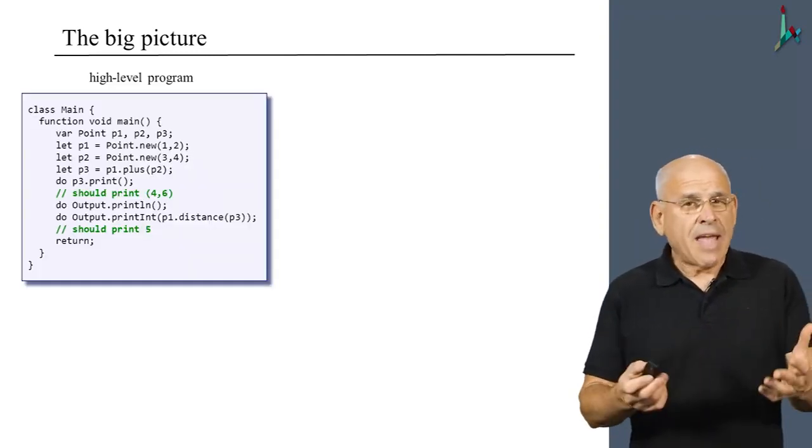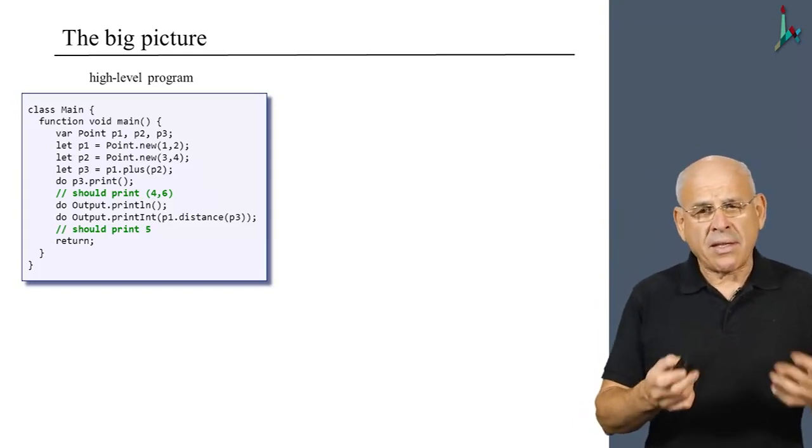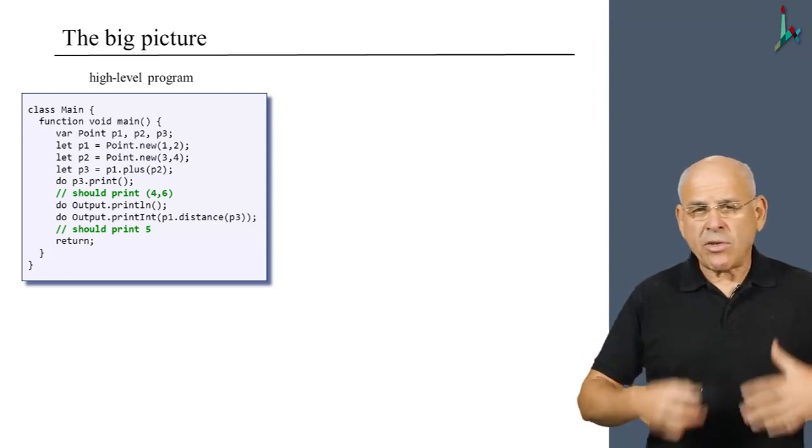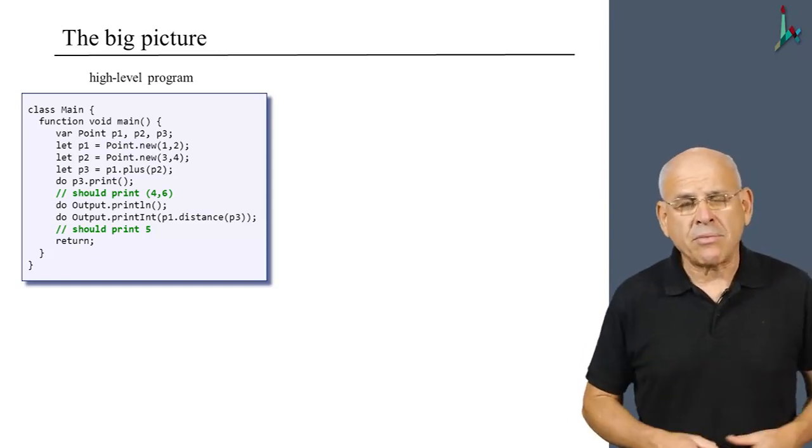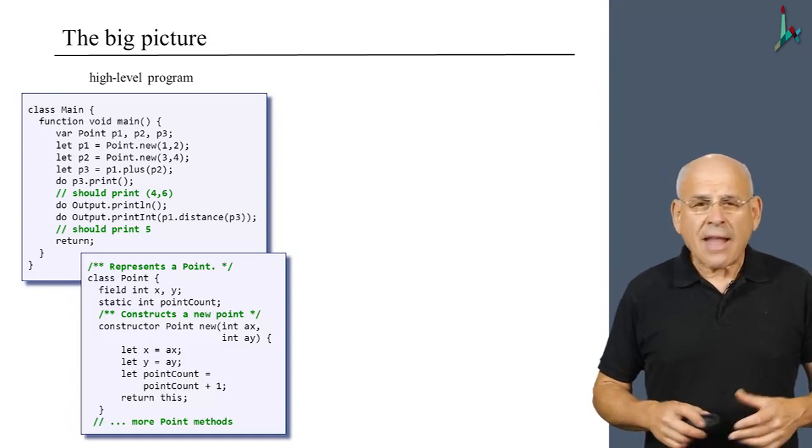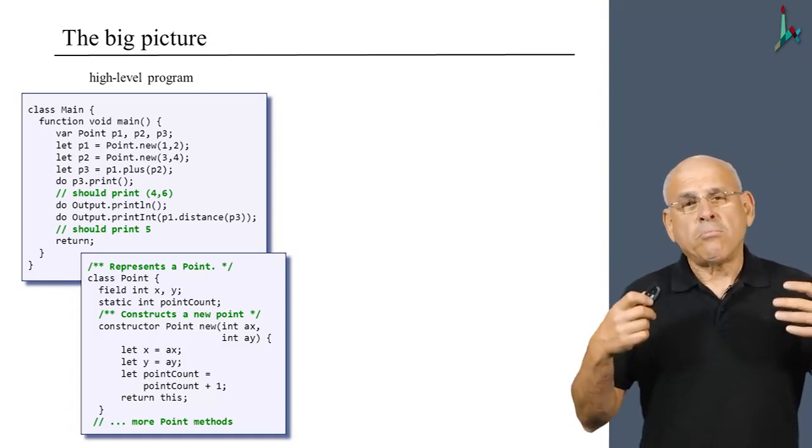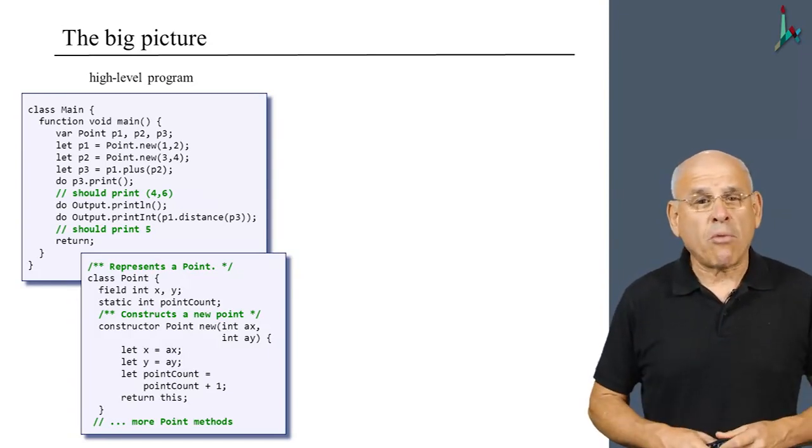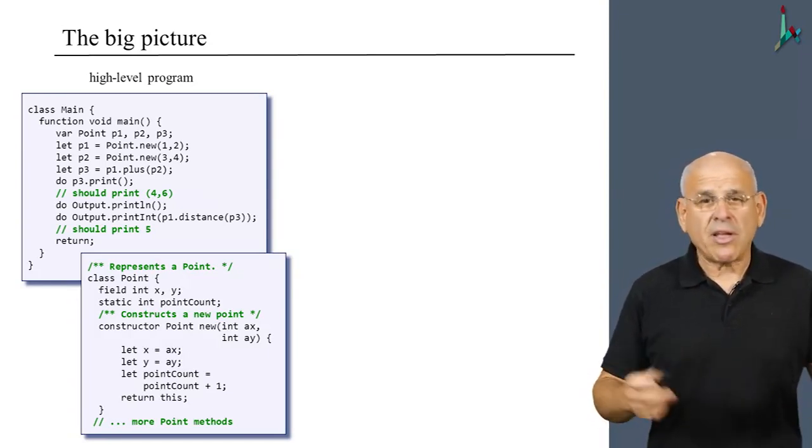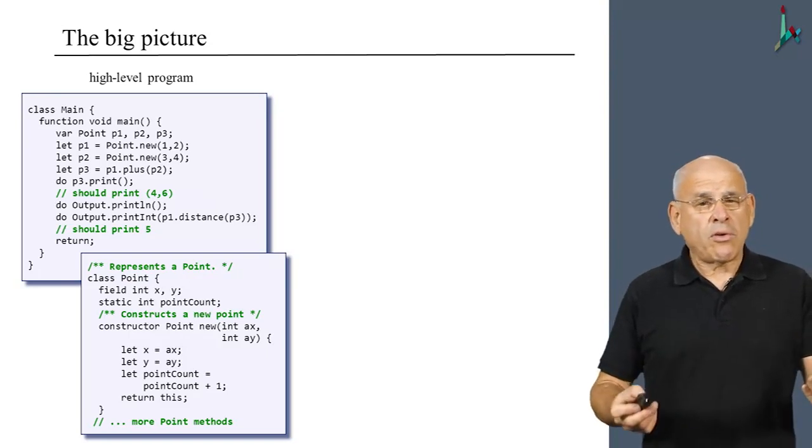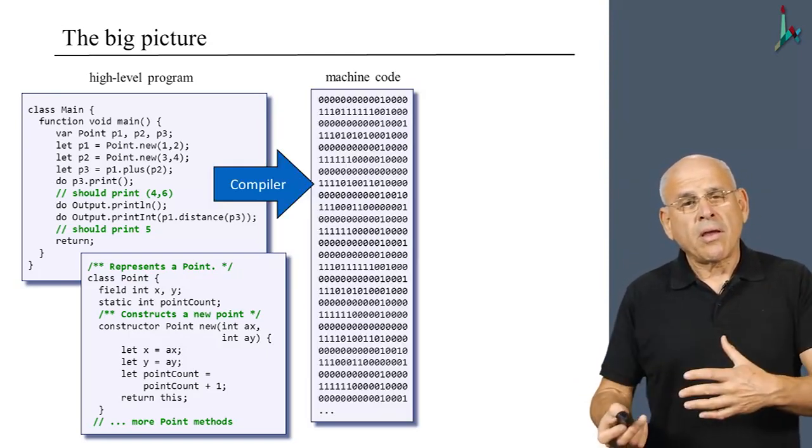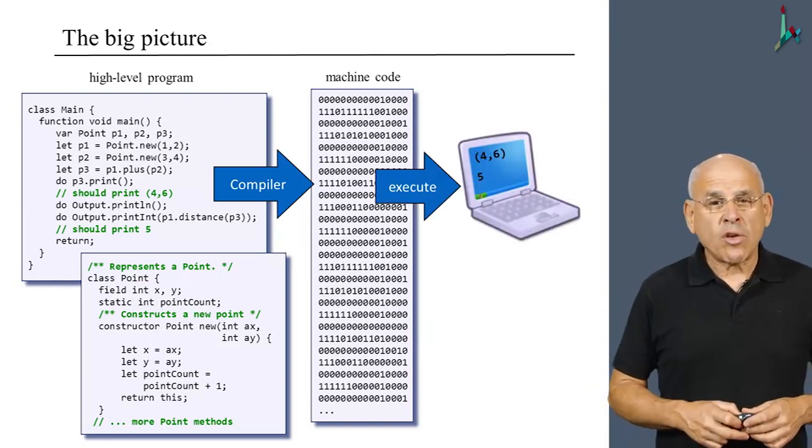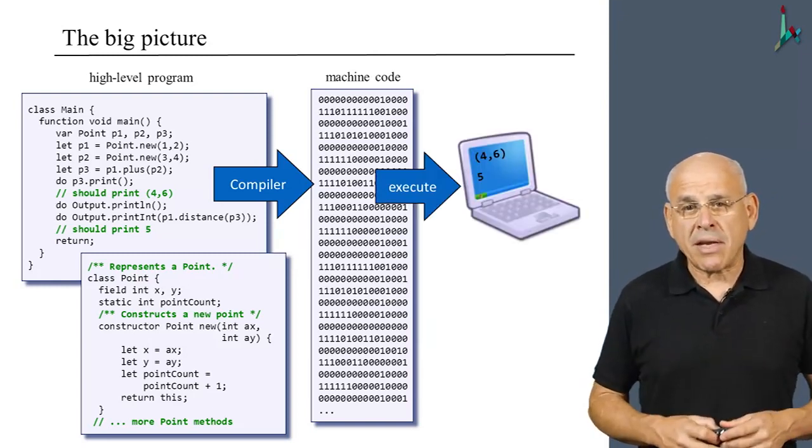Here's an example of a program that I believe we've seen in the past, in which we generate some points in a two-dimensional space and manipulate them to some desired end. And like many modern object-oriented languages, the program typically consists of more than one class. What we want to do is to take this code, compile it into machine language, and then execute the executable code in order to get some meaningful results.